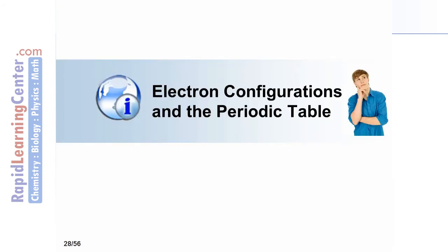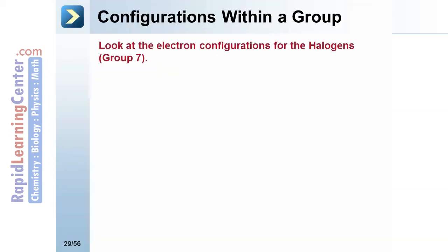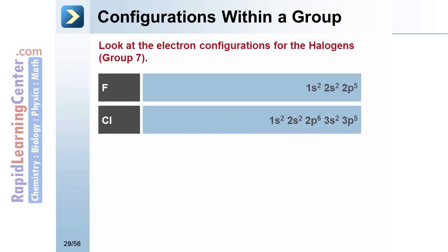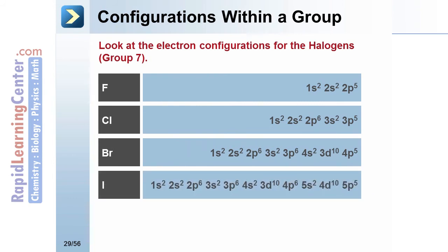How do electron configurations relate to the periodic table? Look at the electron configuration for each of the halogens. They are all in group number 7 on the periodic table. They each end with p5. They end with a different principle energy level—fluorine with level 2, chlorine with level 3, and so on—but they all end with 5 electrons in the p subshell.